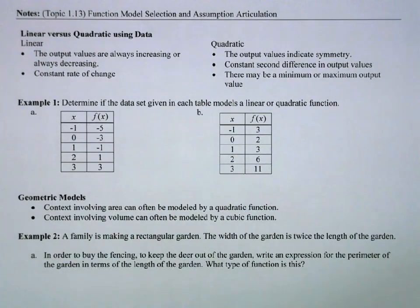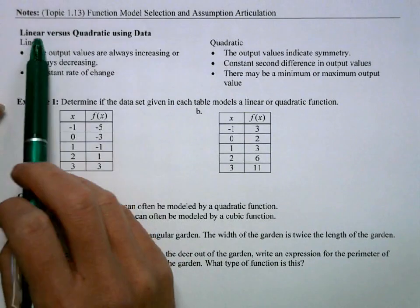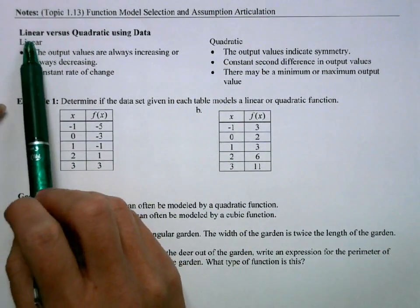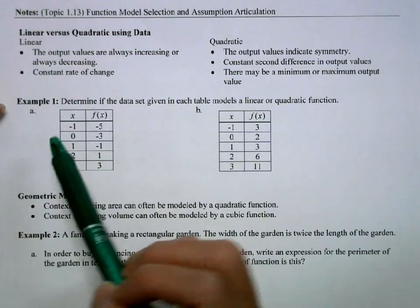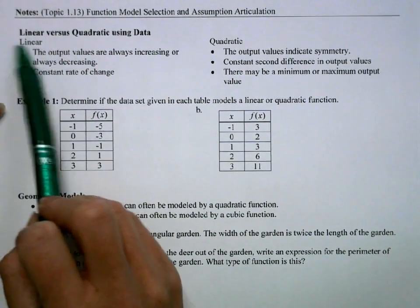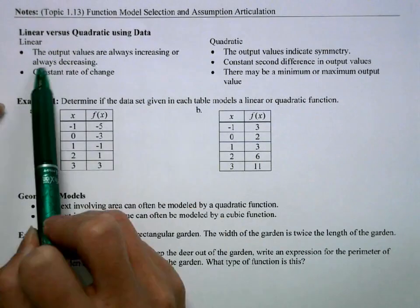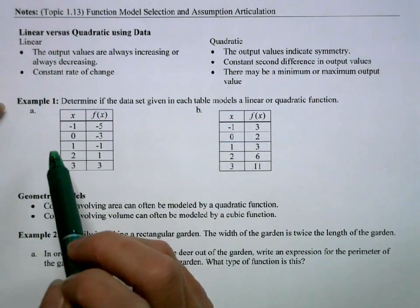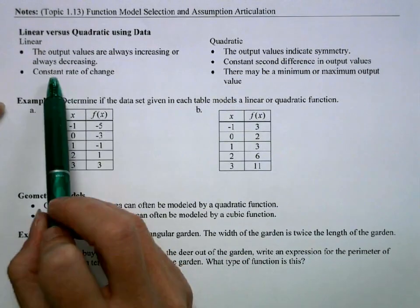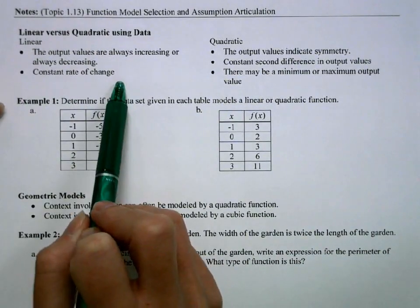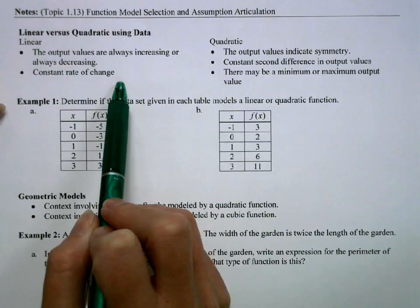First, we're going to look at an old topic we've already addressed: if I have a table of values, how can I tell if we have a linear versus a quadratic function? Some hints — linear functions have output values that are always increasing or always decreasing. They can't bounce around; then it wouldn't be a line. Our big indicator is a constant rate of change.